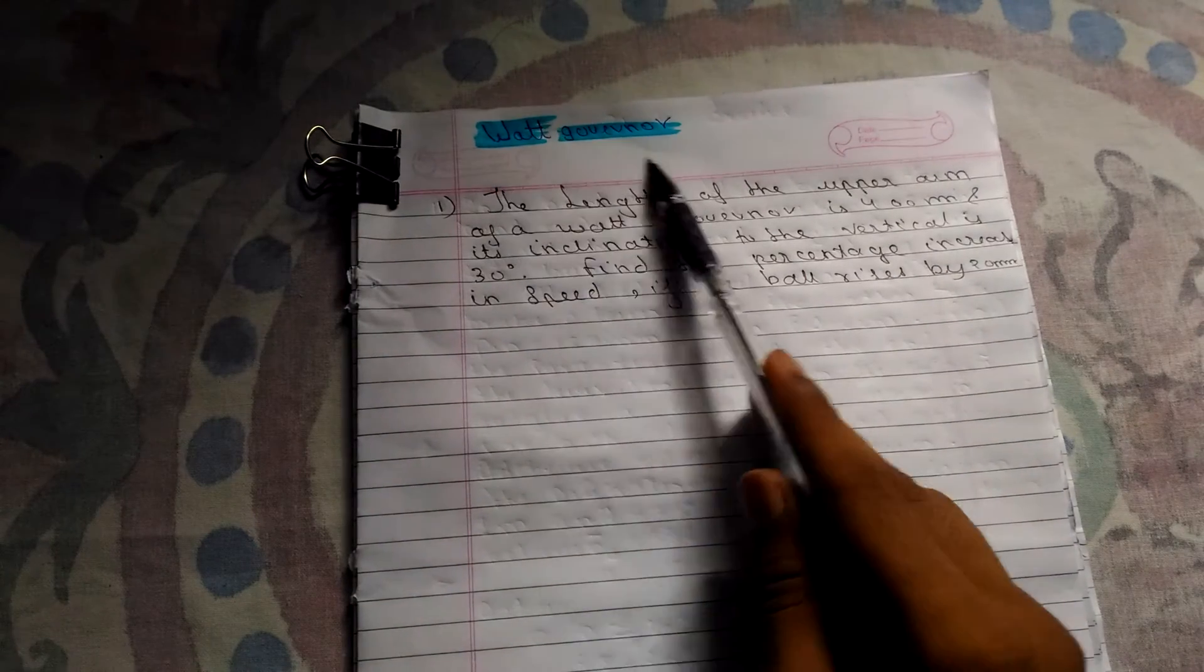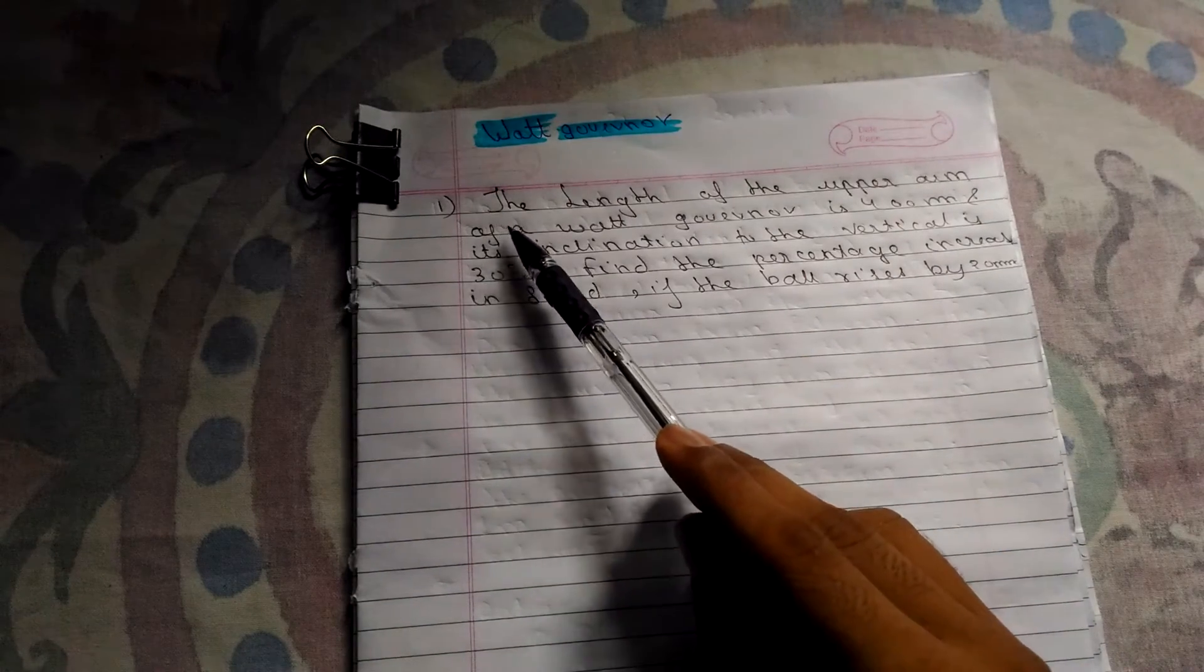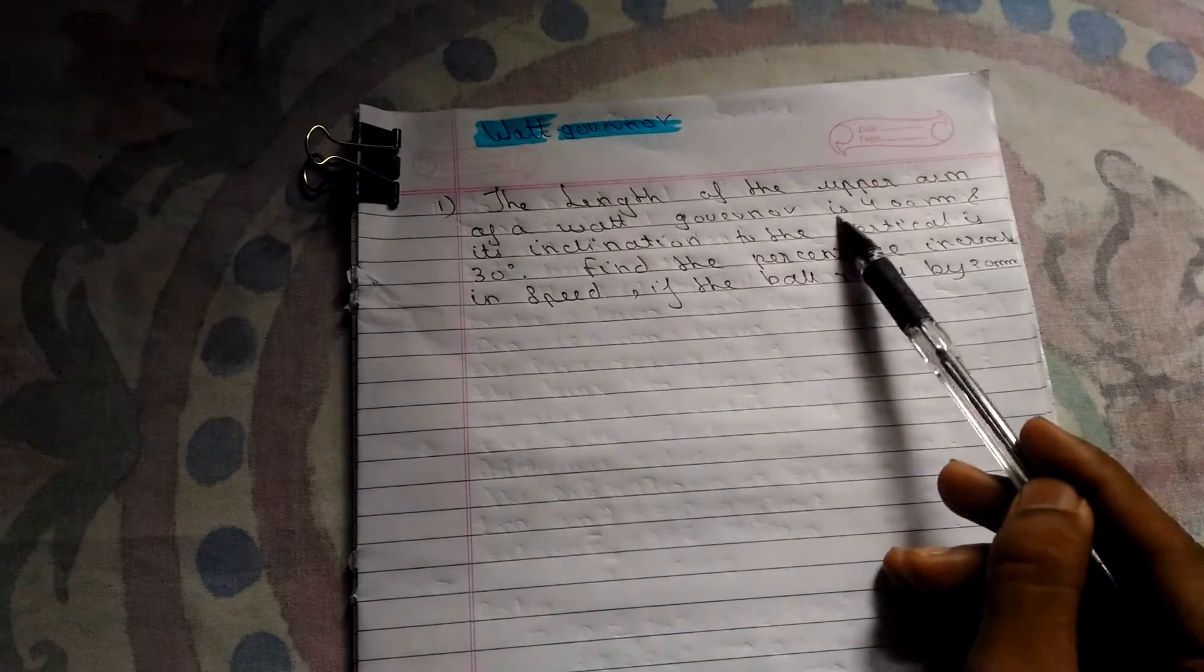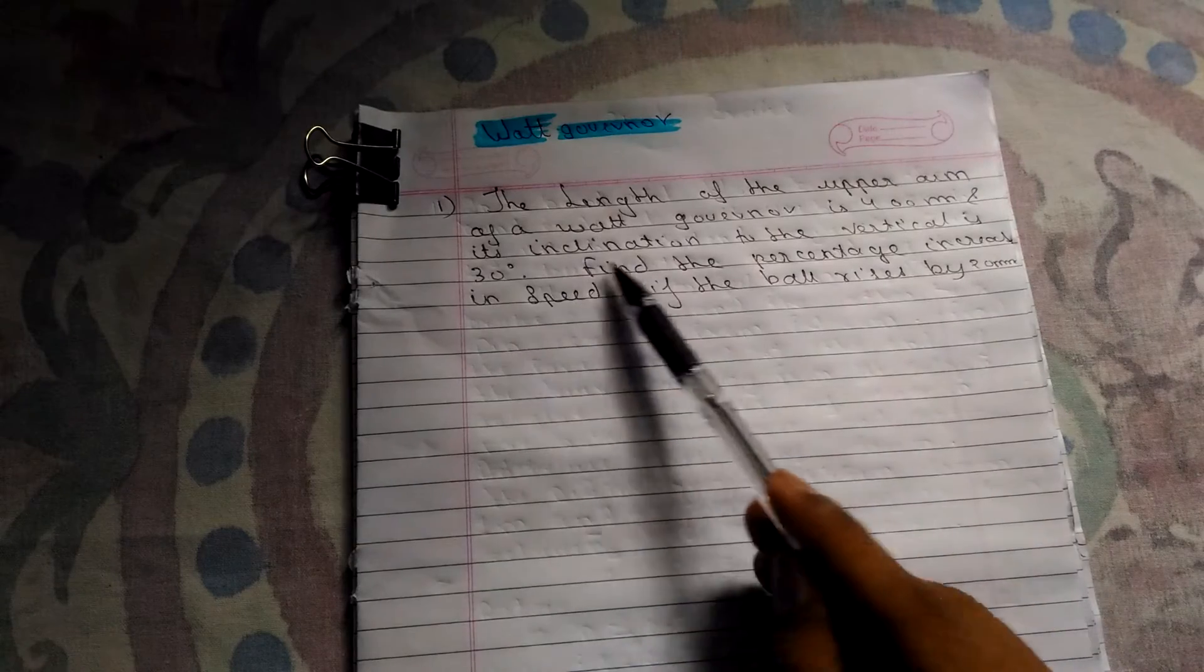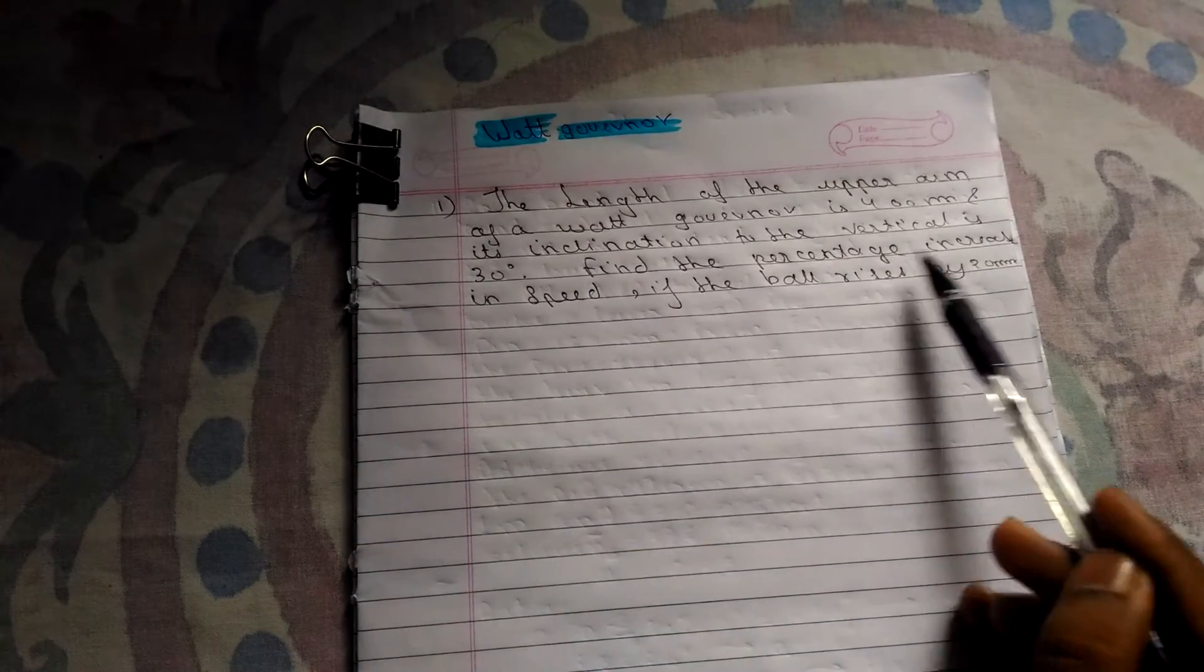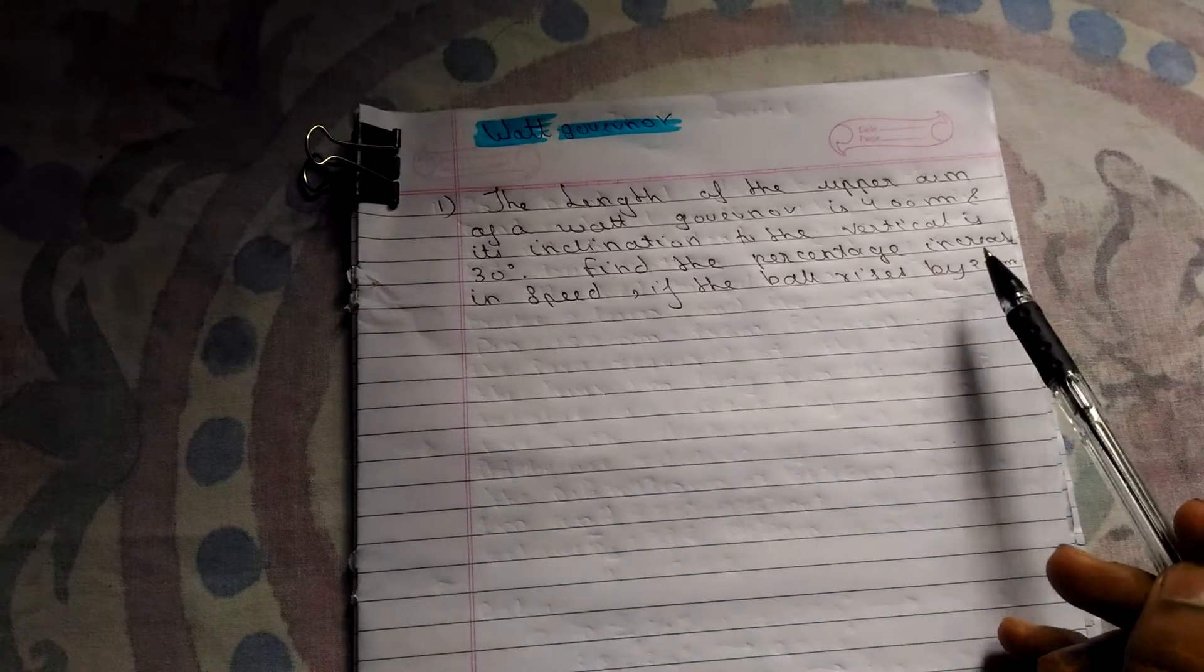Hey guys, here is another problem on Watt governor. The question is: the length of the upper arm of a Watt governor is 400 mm and its inclination to the vertical is 30 degrees. Find the percentage increase in speed if the ball rises by 20 mm.